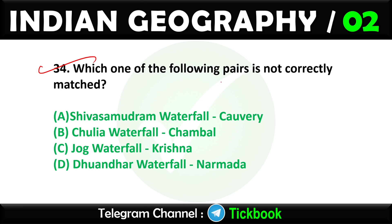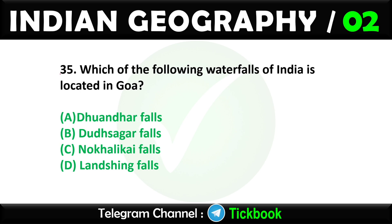Question thirty-four: Which one of the following pairs is not correctly matched? Option number C: Jog Waterfall is not on the Krishna river. Question thirty-five: Which one of the following waterfalls of India is located in Goa? Option number B is the right answer: Dudhsagar Falls.